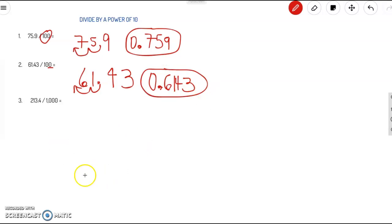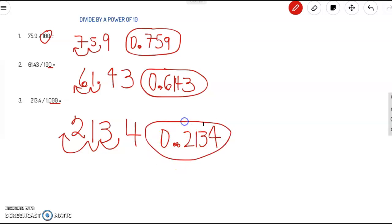Now go ahead and pause this video and try number three on your own and then resume it. Fantastic. This one might be a little bit tricky because it's dividing by a thousand this time. So we have three zeros here. So we're going to move the decimal to the left three times. So if you got 0.2134, then we are on the same page. Great job, guys.